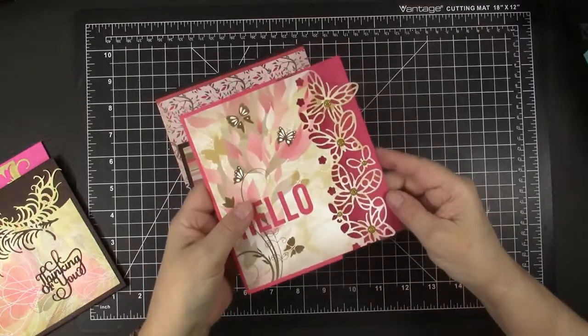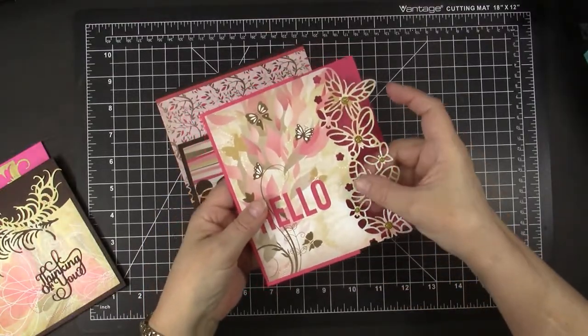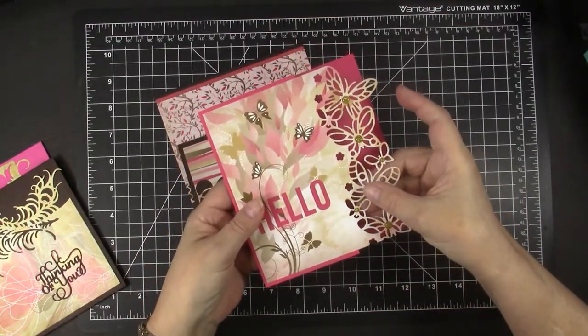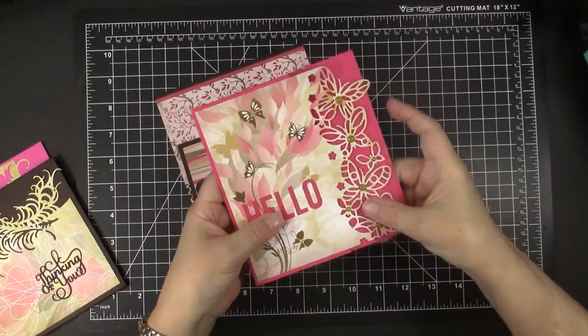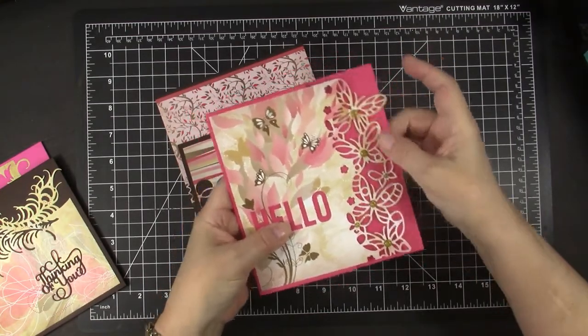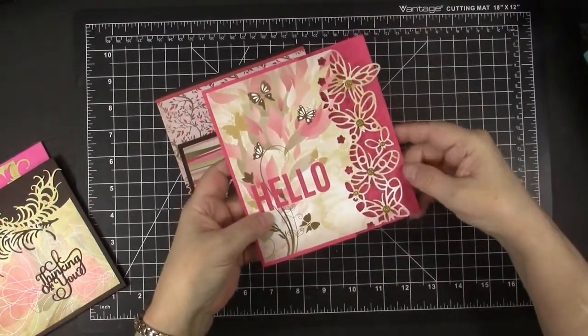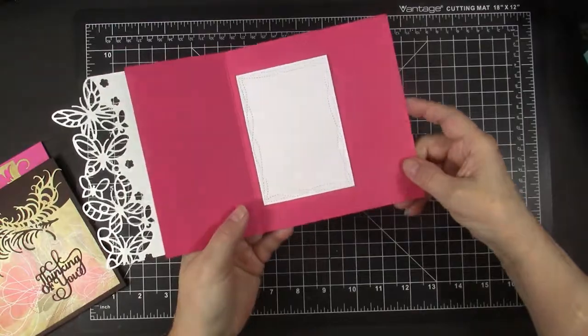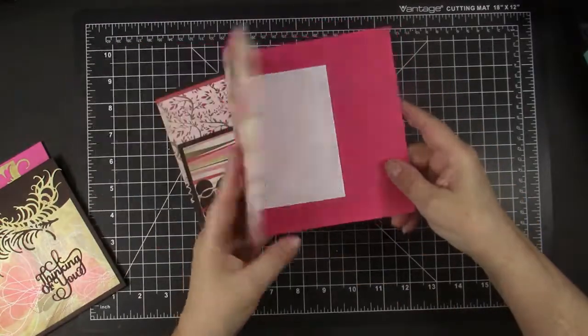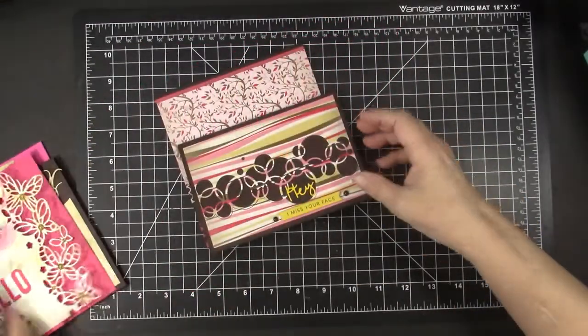Here's another way to use edger dies. Just let them hang off the edge of the card front over a contrasting card base color. So I have a Hello die here with that beautiful butterfly edger and then put a piece of paper in the inside to write my message.